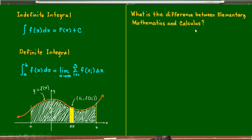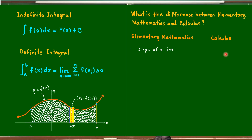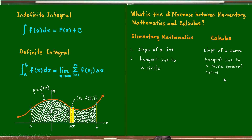What is the difference between elementary mathematics and calculus? In pre-calculus, you can talk of the slope of a line as in analytic geometry, but in calculus you can talk of the slope of any curve — whether it is a circle, a parabola, a polynomial curve, or a rational function — at any point. In pre-calculus or elementary mathematics, you can talk of a tangent line to a circle, but in calculus you can talk of a tangent line to a more general curve.